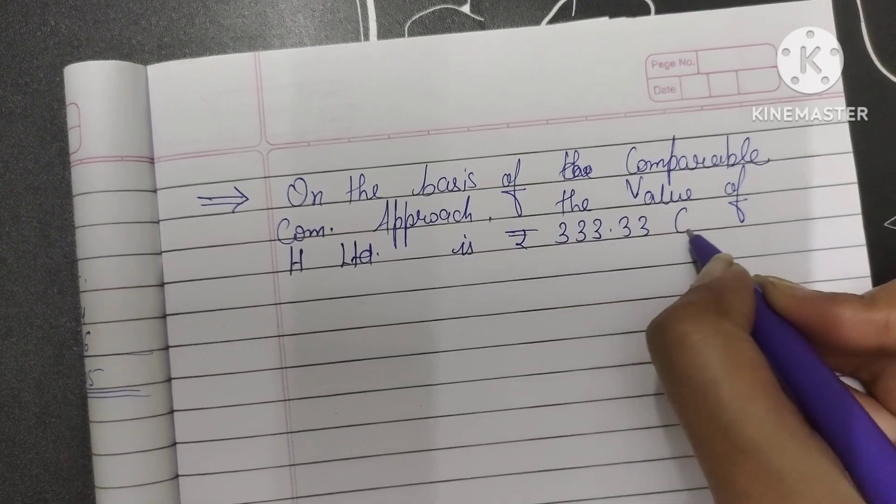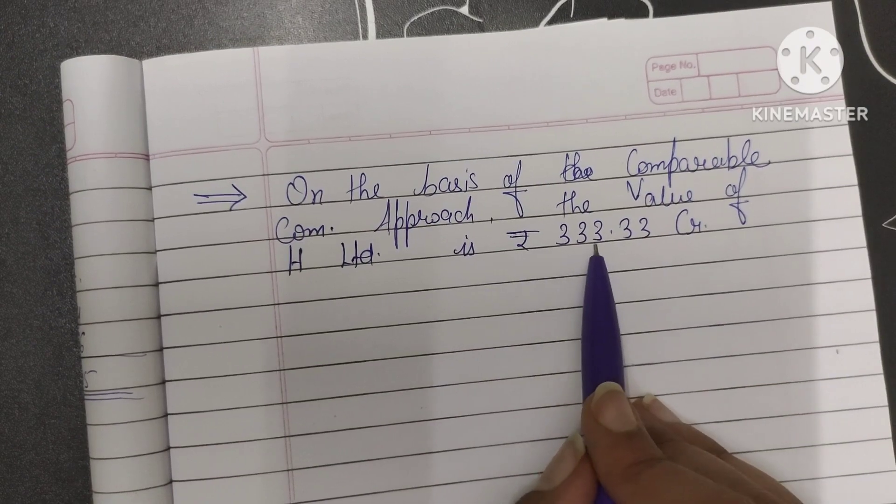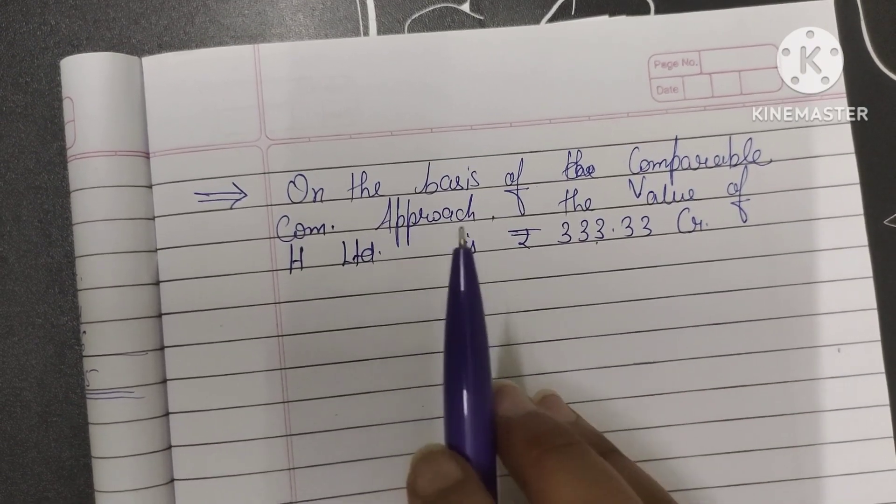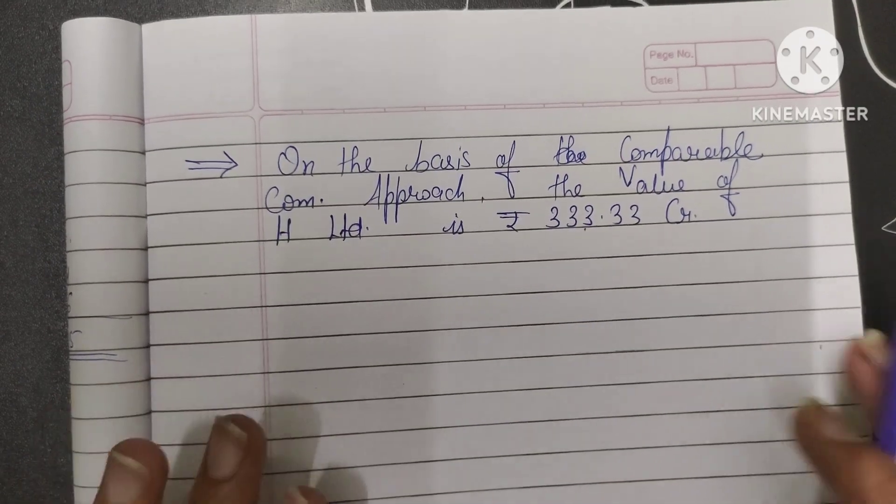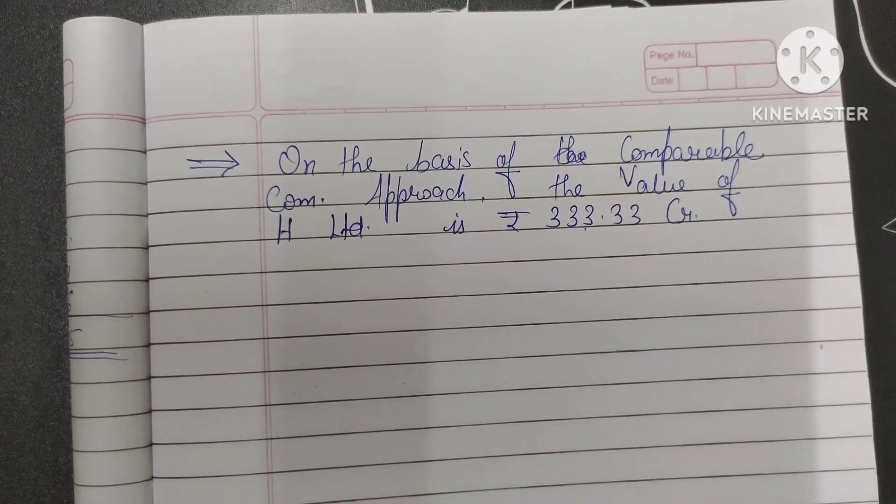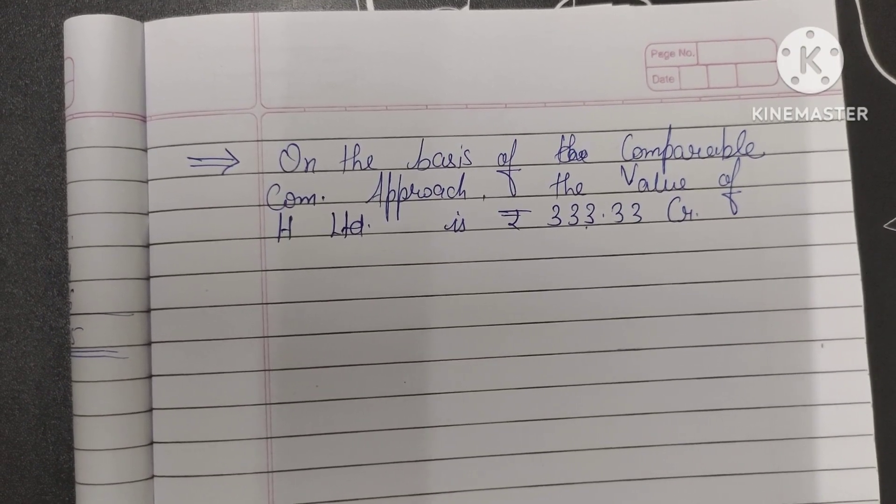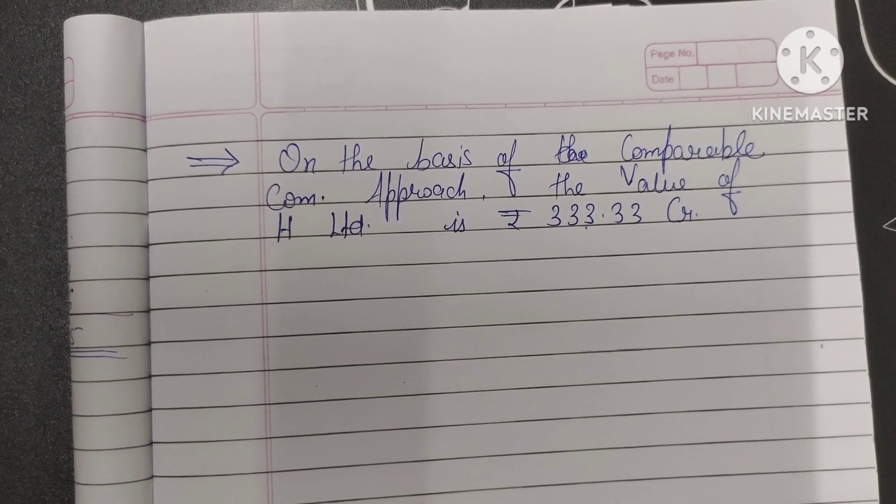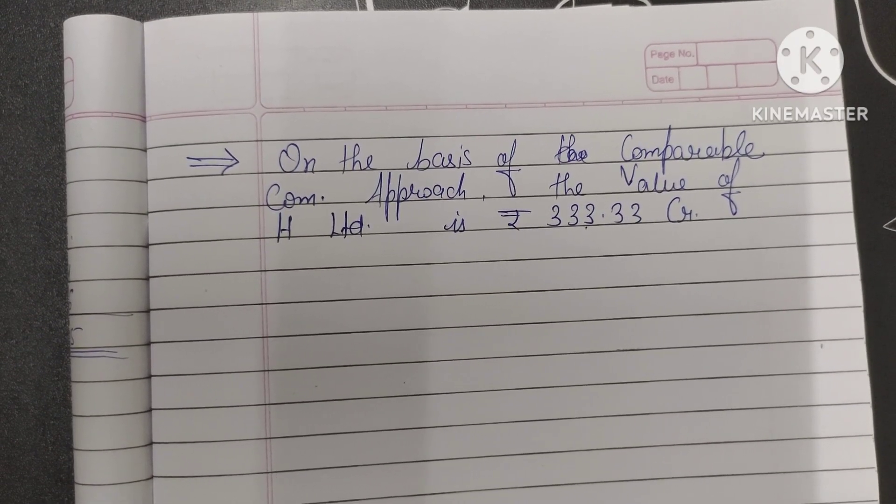Whenever you answer questions about value of business, you have to write down interpretation as well. So I hope this question is clear to you. In the upcoming videos we will solve two or three questions of comparable company approach which are asked in GTU examination. So kindly watch the videos till the end, so it will help you to clear all the doubts regarding these methods.